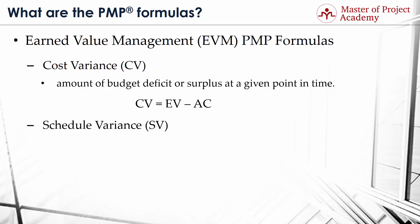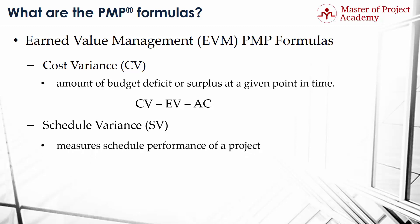PMP formula number 4: Schedule Variance or SV. Schedule Variance's aim is to measure schedule performance through the difference between the earned value and the planned value. Accordingly, its formula is: SV equals EV minus PV.